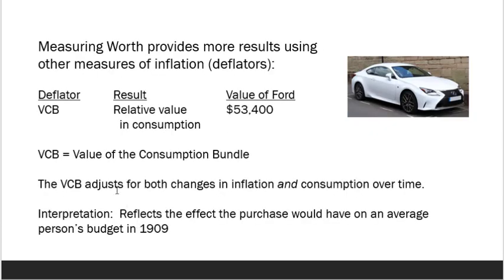If we really want to know how rich you had to be to buy the Model T, we should look at some of the other results. For example, we could use what we call the relative value in consumption, which uses the VCB, or the value of the consumer bundle, as our deflator. This is a good alternative to the CPI because the VCB adjusts for both changes in inflation and changes in consumption over time. You can think of this as a better reflection of the effect that spending $850 would have had on the average person's budget back then, when people generally consumed much less than people do today. As a result, our value is closer to the value of, say, a luxury vehicle today.